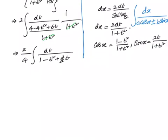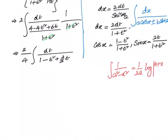Now we can solve this problem from this step onwards by splitting the middle term and dividing that into factors, or we can also do it by converting it into a standard integral. The standard integral we are looking at here is integral of 1 by a square minus x square, which is equal to 1 by 2a log of a plus x divided by a minus x. Let us use completing the squares method to transform the given expression in terms of a square minus x square.